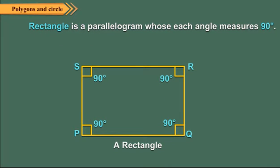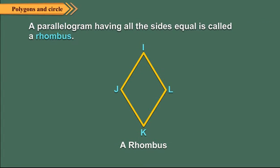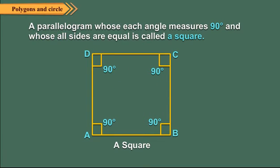A rectangle is a parallelogram whose each angle measures 90 degrees. In the figure, PQRS is a parallelogram whose each angle measures 90 degrees, so PQRS is a rectangle. A parallelogram having all sides equal is called a rhombus. In the figure, IJKL is a parallelogram in which IJ is equal to JK is equal to KL is equal to LI.